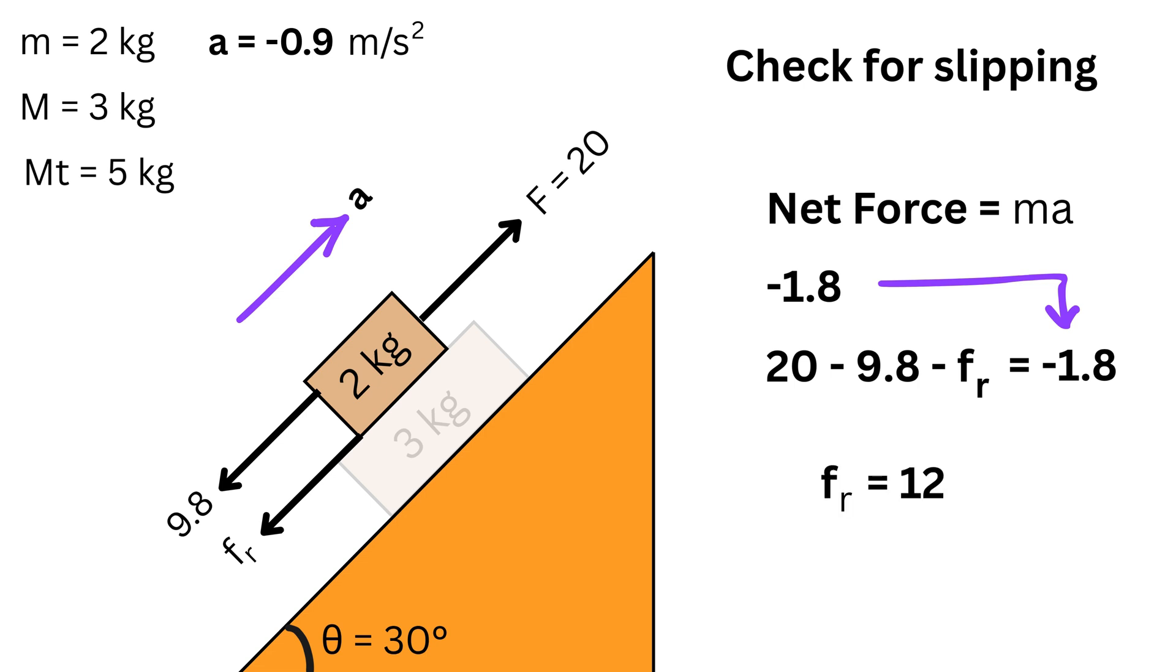This means the friction between the blocks needs to be 12 Newtons acting down the incline on the small block to keep them moving together. You can take the direction of f_R up the incline as well. This way you get F, or 20 plus f_R minus 9.8 equals minus 1.8. Solving for f_R gives minus 12, which gives the same result.